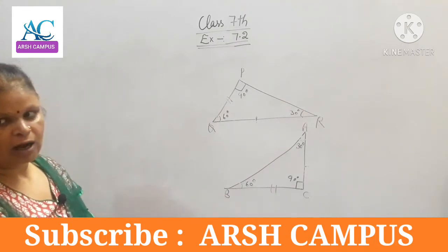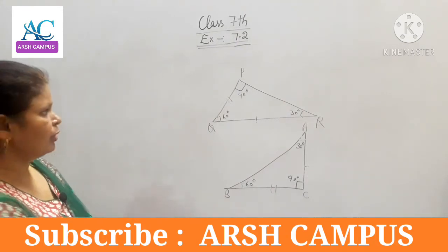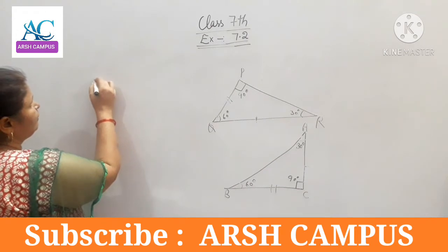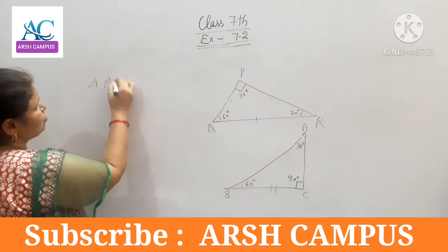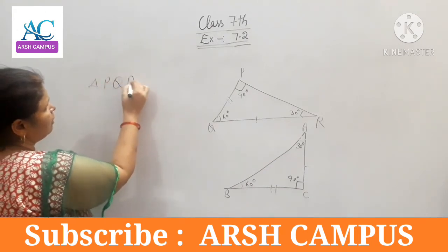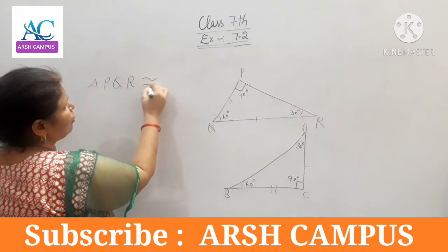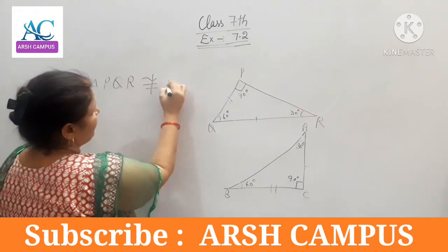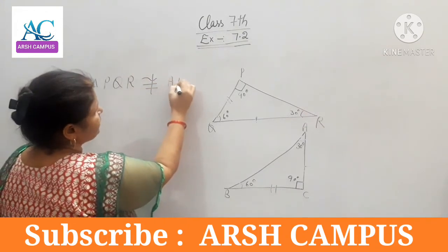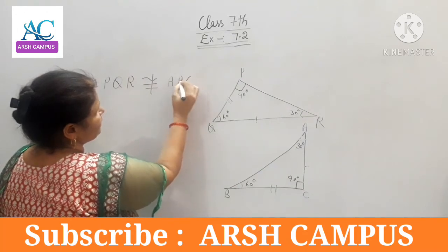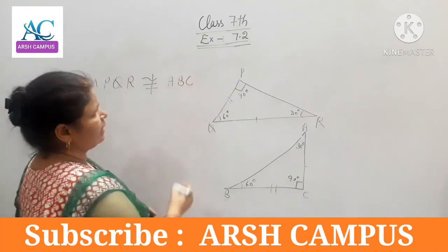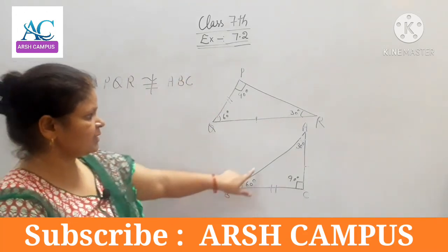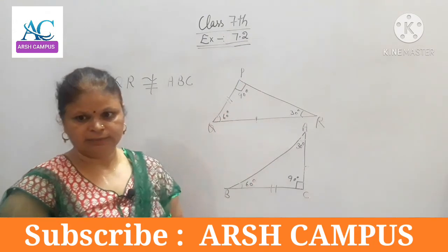Therefore, triangle PQR is not congruent to triangle ABC, because this particular side is different.